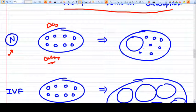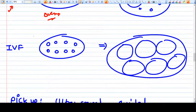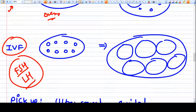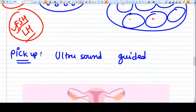What we do in IVF is we provide external FSH and LH. Remember, we provide external injections of FSH and LH, so every follicle will become bigger and become a dominant follicle. Here you can see every follicle has become bigger. Now we do a pickup.